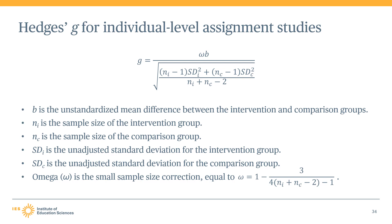Let's walk through this equation together. The effect size calculation includes B, which represents the unstandardized mean difference between the intervention and comparison groups on some measure. This mean difference is multiplied by an omega term, which is simply the small sample size correction. This omega term is what differentiates the Hedges G effect size from Cohen's D effect size you often see in the literature.